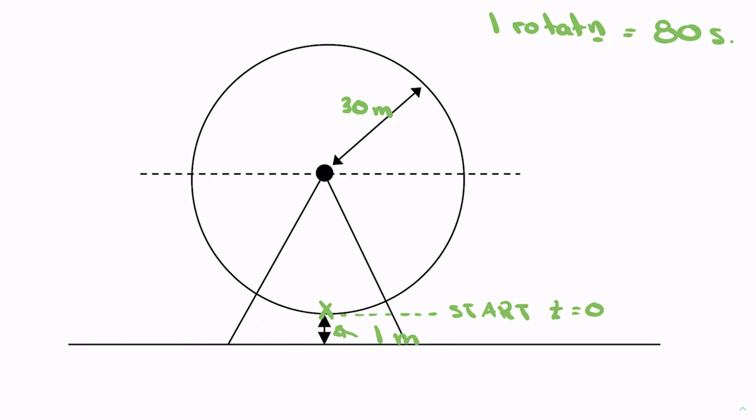I'm going to break this Ferris wheel up into manageable chunks in terms of the time. If one full revolution is 80 seconds, then assuming that it moves with uniform velocity—in other words, there's no acceleration, which is completely not like real life, but we're going to have to simplify the scenario here.